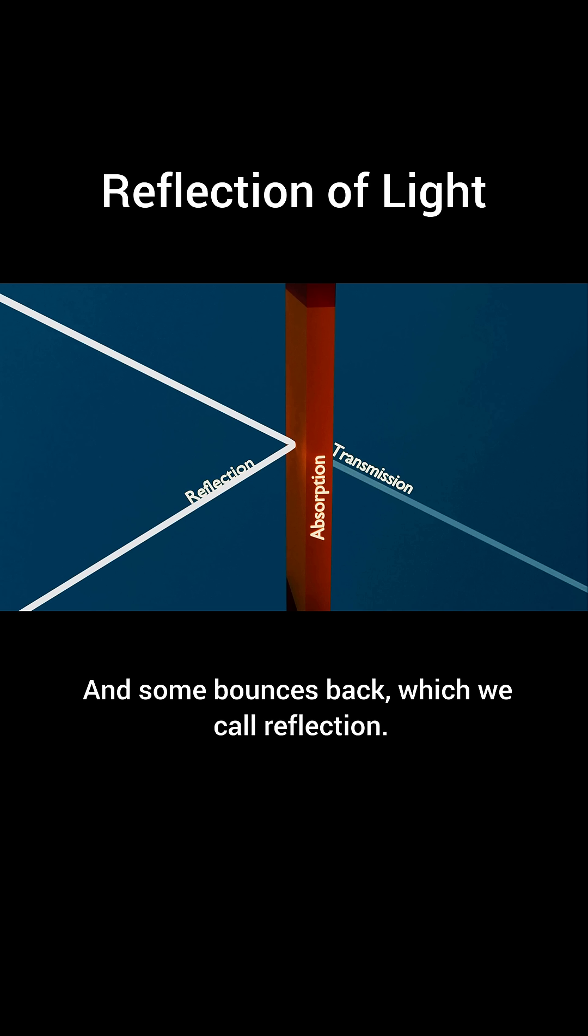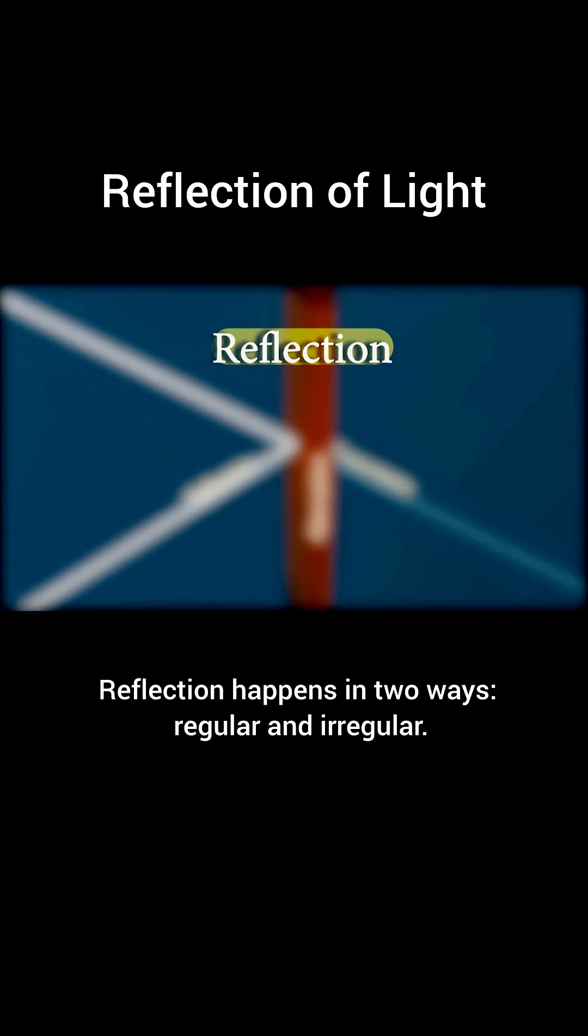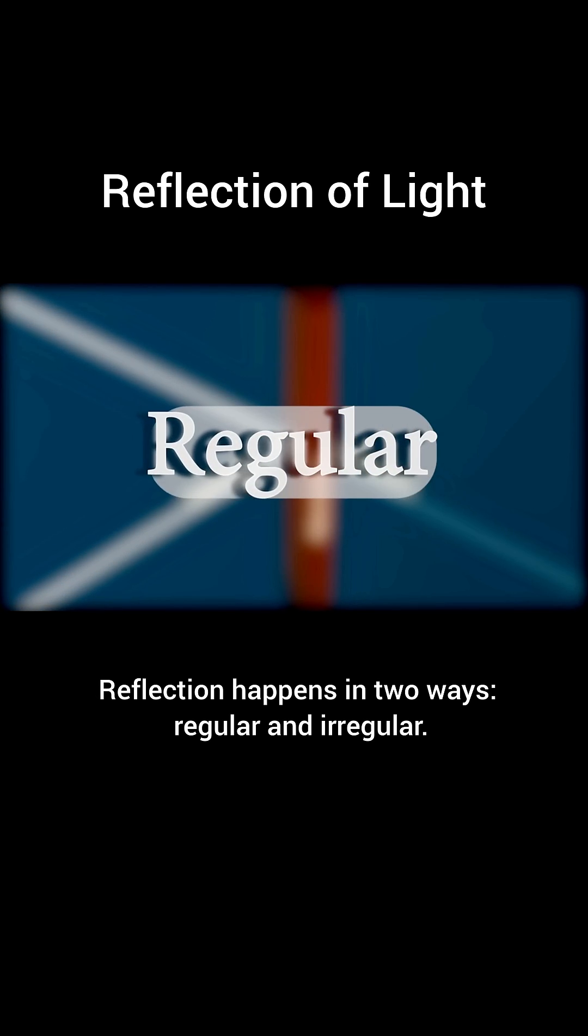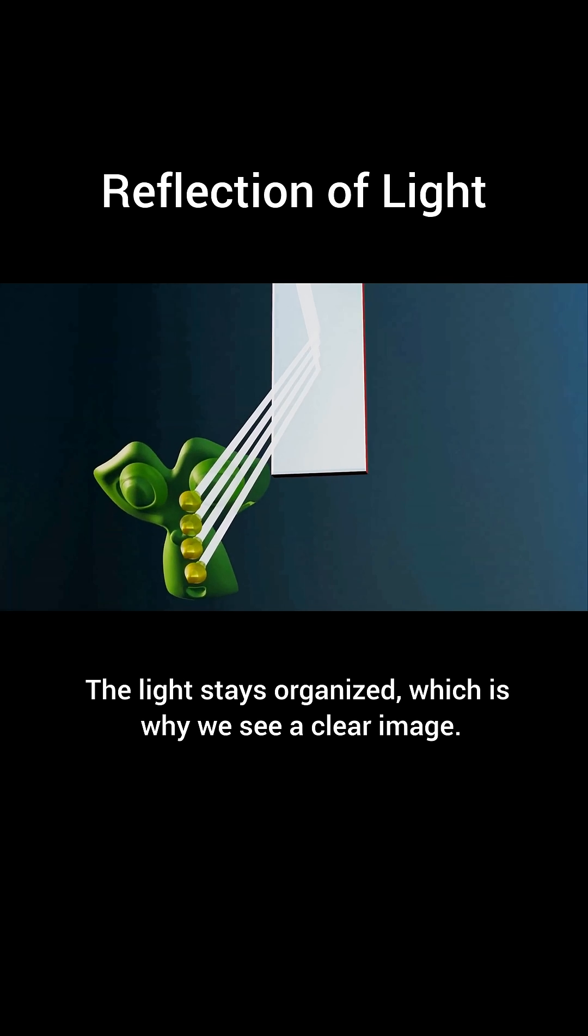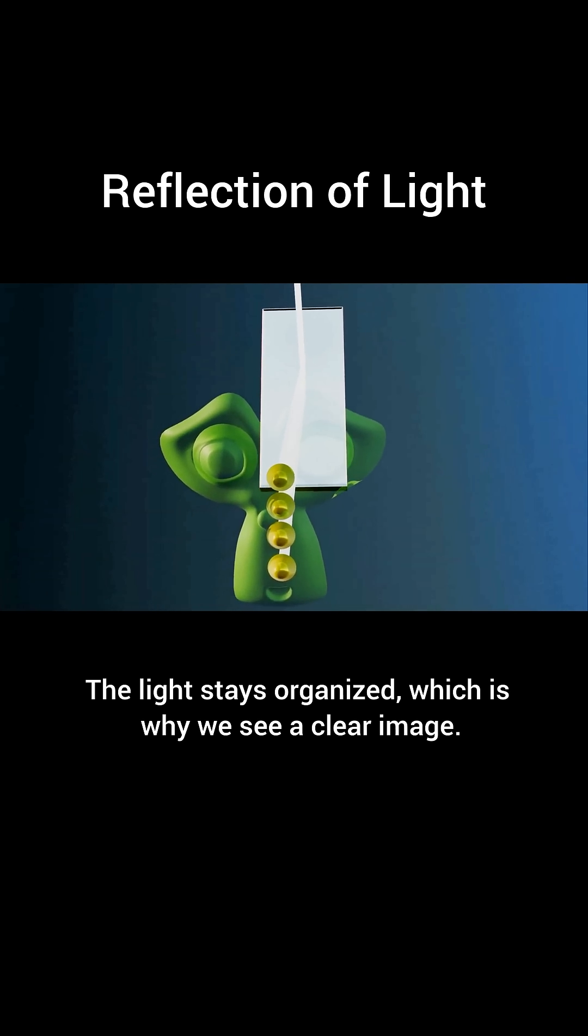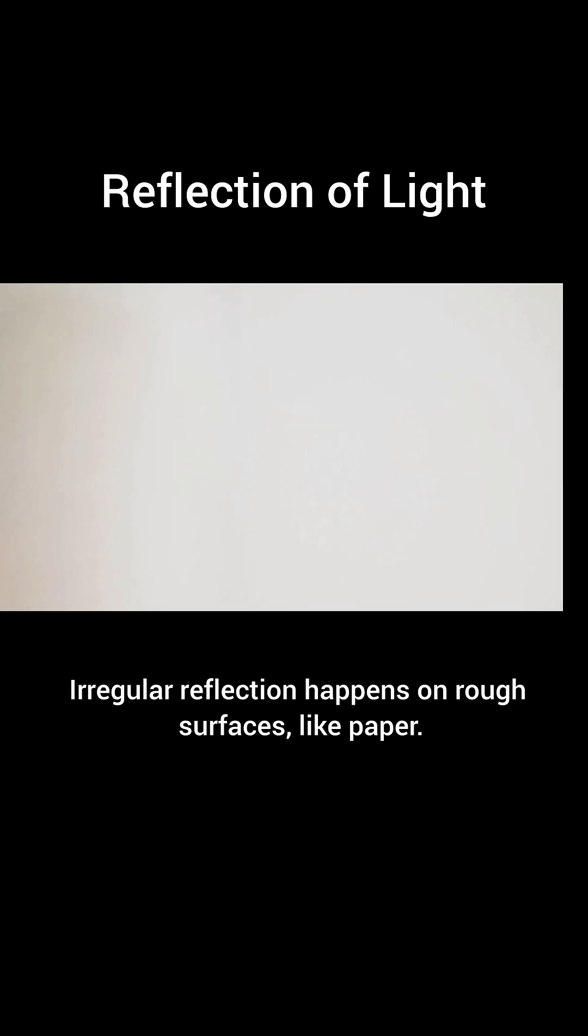Reflection happens in two ways: regular and irregular. Regular reflection occurs when light hits a smooth surface like a mirror. The light stays organized, which is why we see a clear image. Irregular reflection happens on rough surfaces like paper.